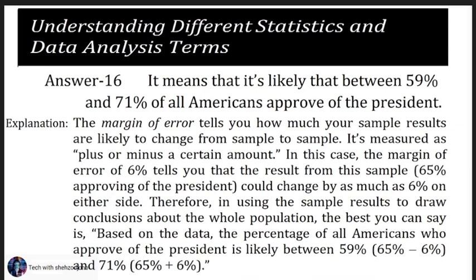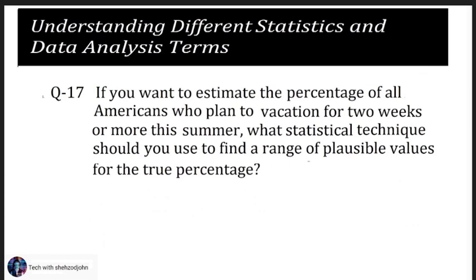The margin of error is measured as plus or minus a certain amount. In this case, the margin of error of six percent tells you that the result — 65 percent approving of the president — could change by as much as six percent on either side. Therefore, using the sample result to draw conclusions about the whole population, the best you can say is: based on the data, the percentage of all Americans who approved of the president is likely between 59 percent and 71 percent.